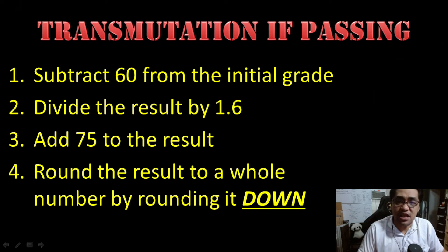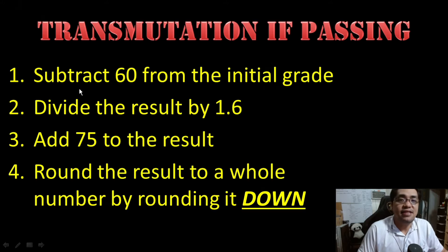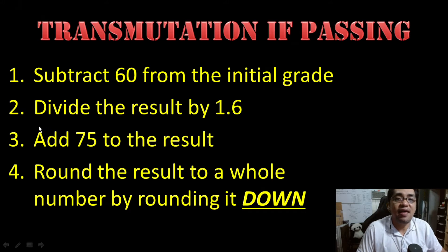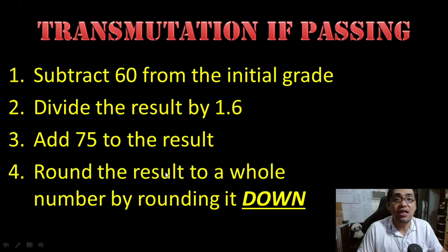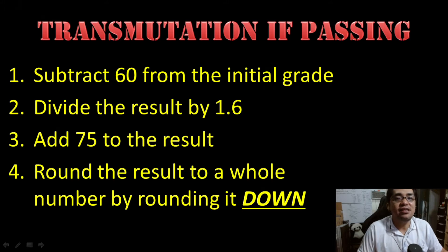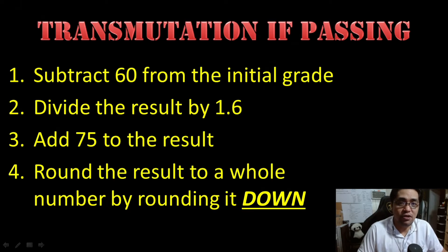So, how do you transmute if the initial grade is passing? Number one, subtract 60 from the initial grade. Step two, divide the result by 1.6. And then step three, add 75. Step four — very important — round the result to a whole number by rounding it down. In short: minus 60, divided by 1.6, plus 75, round down, in that order.